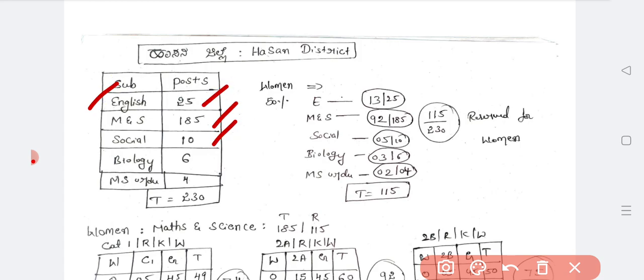Subject-wise: English 25, Maths and Science 185, Social 10, Biology 6, Maths and Science 4, totally 230 seats. The women's reservation is 50%: English 185, Maths and Science 9 and 180, Social 5, Biology 3 and 6, Maths and Science 2 and 2.